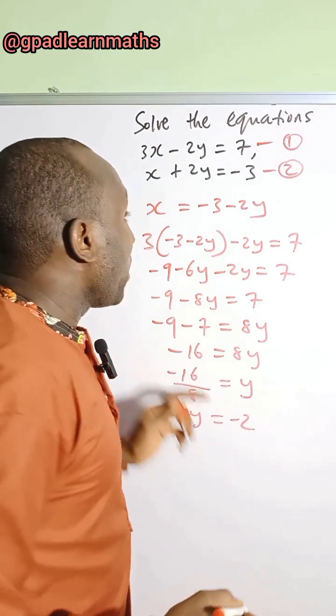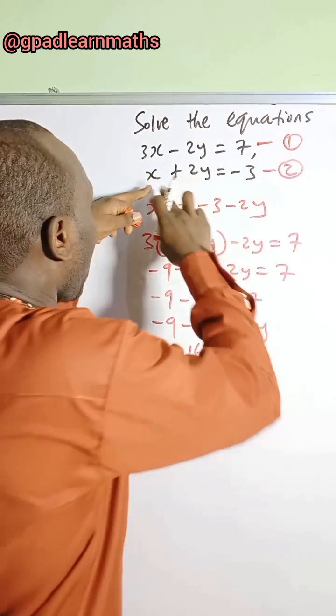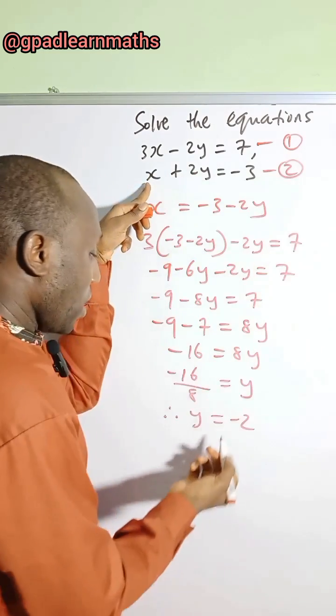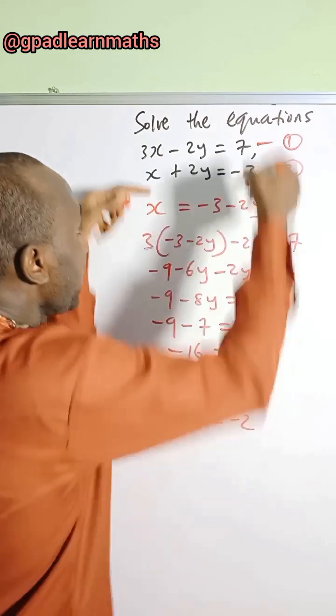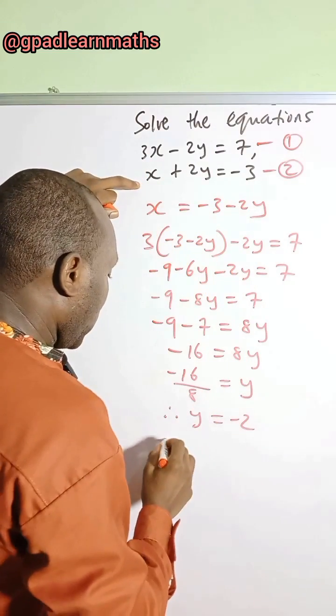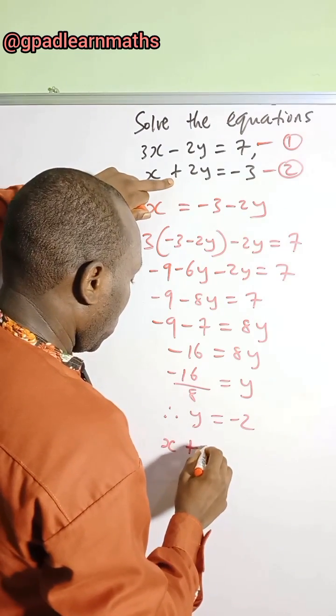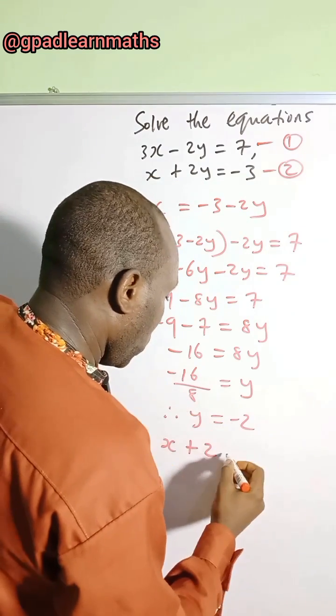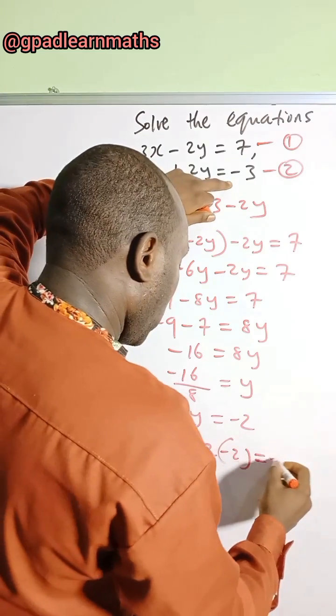Now, we can get the value of x. I can put it back into equation 2. So let's substitute the value of y in equation 2. It's much easier to use equation 2. Now, it's x plus 2 times minus 2, and this is equal to minus 3.